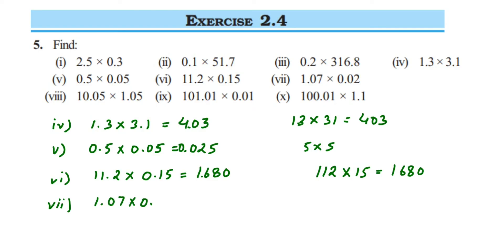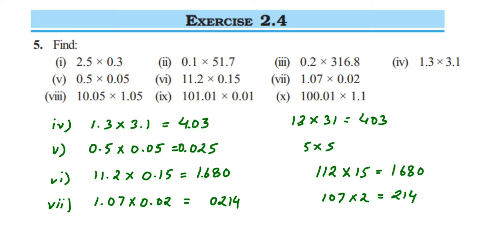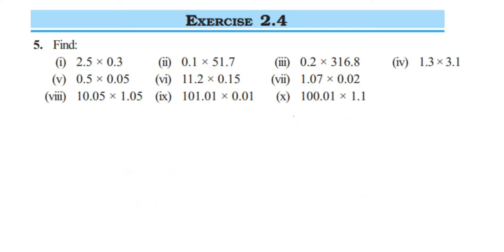The seventh question is 1.07 multiplied by 0.02. Multiplying 107 and 2 gives 214. The first number has two digits after the decimal, the second also has two digits, so total four digits. Counting four digits from the right, we only have three digits in 214, so we add one zero in front: 0214. Then placing the decimal gives 0.0214.